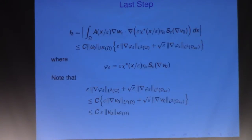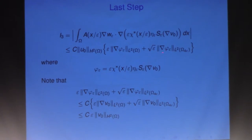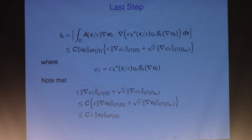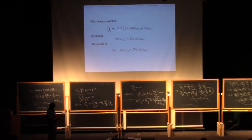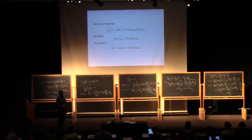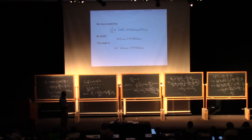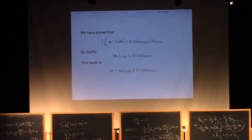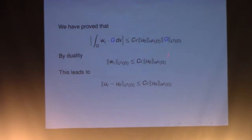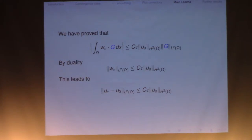Finally, the third term: again use the main lemma, treating the whole thing as a test function. You need to estimate the L2 norm on the boundary, and it works out perfectly fine. Putting this together, we have this estimate for any function g in C_0^∞ of omega. By duality, the L2 norm of W_ε is bounded by epsilon times the L2 norm of U0. The third term is already a good term, so just throw it to the right-hand side.